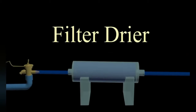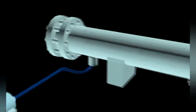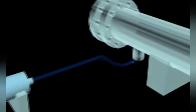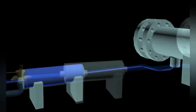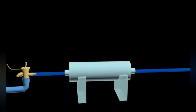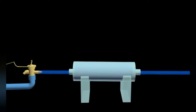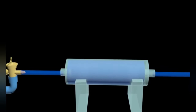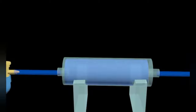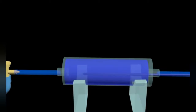Before the refrigerant flows to the next main component, it passes through an additional component called the filter dryer. The dryer acts as a dirt filter and absorbs any moisture present in the refrigerant, ensuring the refrigerant is clean and dry before entering the expansion valve.